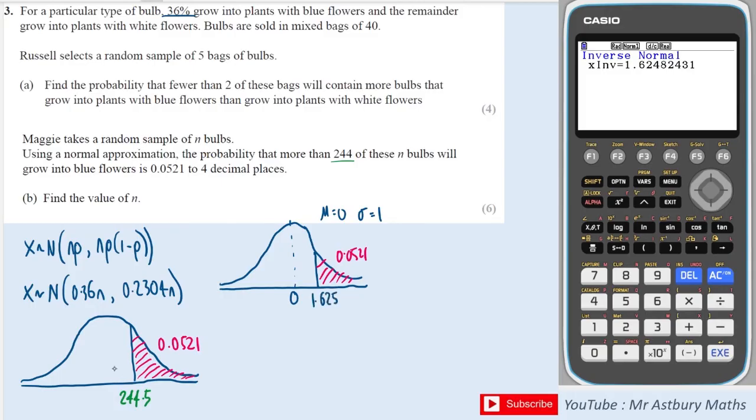So now what we can do is we can use these two distributions and the formula that links them which is z equals x minus mu over sigma. This is going to help us work out mu or sigma from the original distribution. And mu and sigma have our n in them which is what we're trying to solve for.